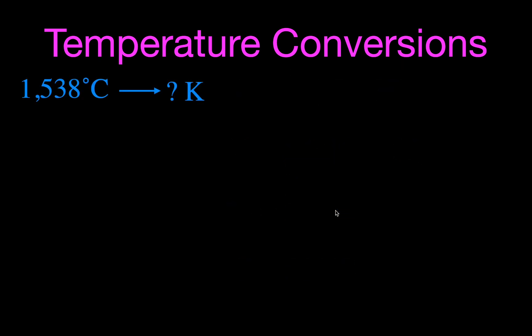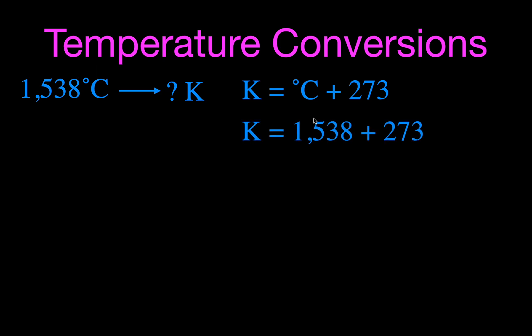Now we'll convert between Celsius and Kelvin. Using the equation, we substitute our Celsius temperature of 1538°C and add 273, which gives us 1811 Kelvin. Remember, we don't say 'degrees Kelvin' — we just say Kelvin.